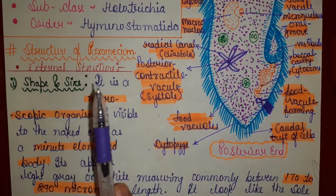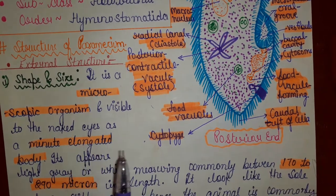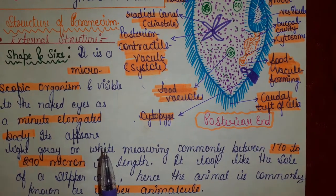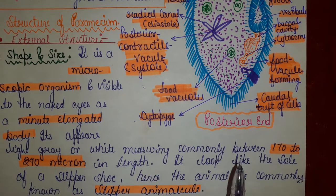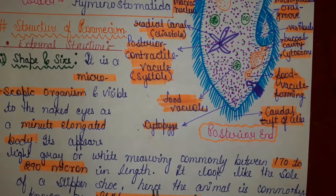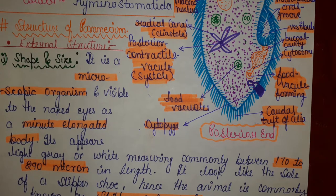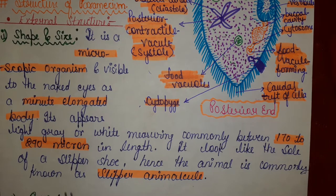External structure: Shape and size. Paramecium is a microscopic organism, visible to the naked eye as a minute elongated body. It appears light grey or white, measuring commonly between 170 to 290 microns in length. It looks like the sole of a slipper shoe, hence the animal is commonly known as slipper animalcule.